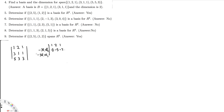Then the third row: we can make this one 0 by multiplying the first equation by negative 5 and adding it to the third one. So I will get 0. And minus 5 times 2 is minus 10, plus 5 is minus 5. Then minus 5 times 1 is minus 5, plus 3 is minus 2.